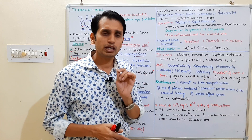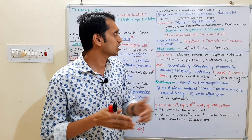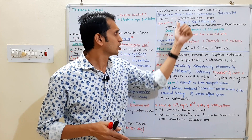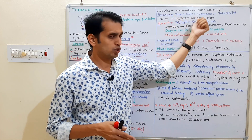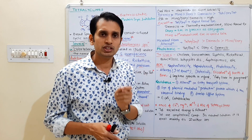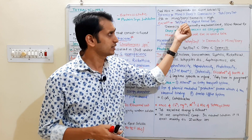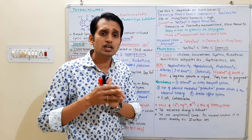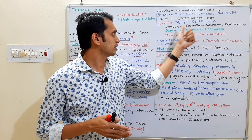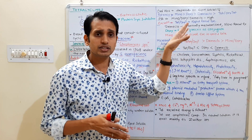Regarding protein binding: doxycycline, minocycline, and demeclocycline have higher protein binding compared to tetracycline and oxytetracycline. Regarding excretion: tetracycline and oxytetracycline are rapidly excreted through the urine via glomerular filtration. Demeclocycline is partially metabolized in the liver and slowly excreted through the urine.